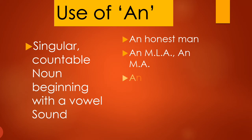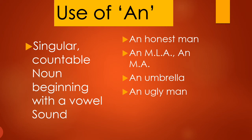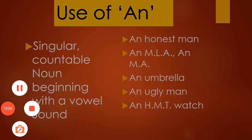An umbrella — the U/A sound at the beginning. An ugly man — not 'ugly' with a hard consonant sound, it starts with an A sound, that is why we use 'an'. An NHMT watch — the H-E sound comes first. I hope it is clear to all. If there is any problem, please watch the video again. Thank you so much and God bless.